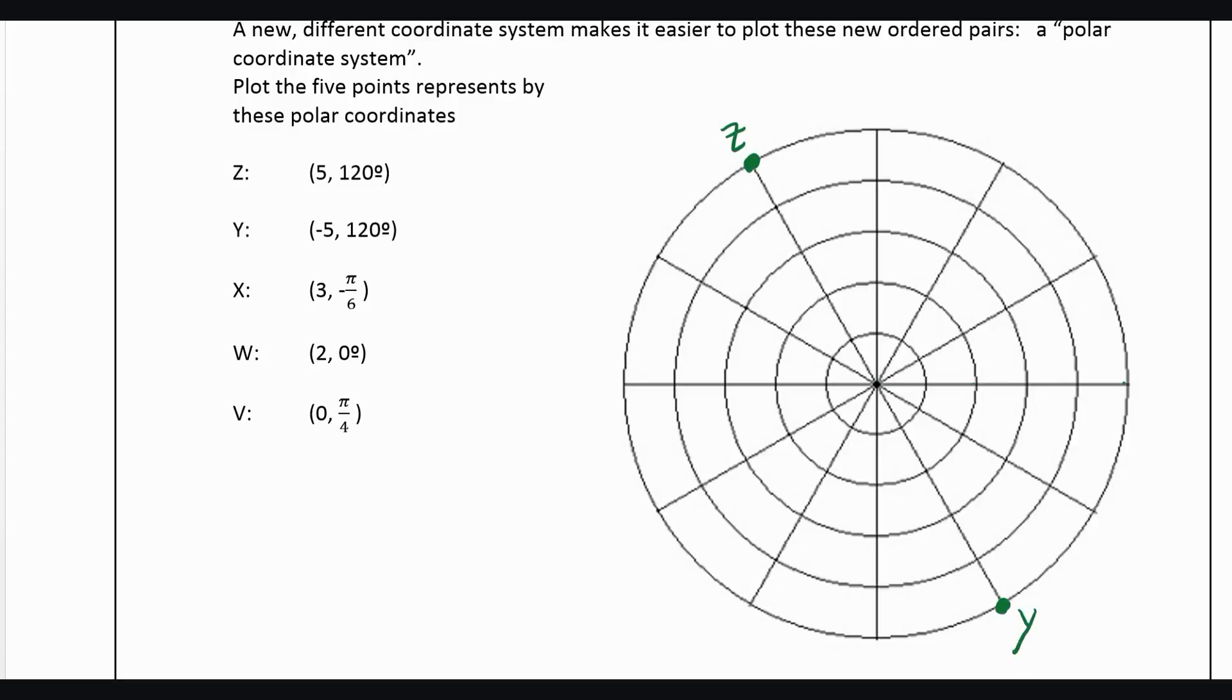X, we want to go out 3 and then a negative pi over 6 would just be a negative 30 degrees. W, we're going out 2, and then we're rotating 0 degrees. So it would be there along the X axis. And then V says we're going out 0 and we're rotating pi over 4. So that would actually be the origin.